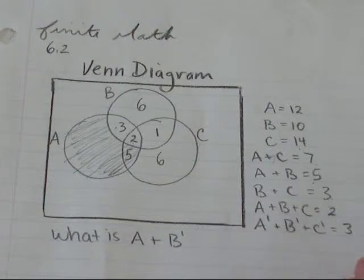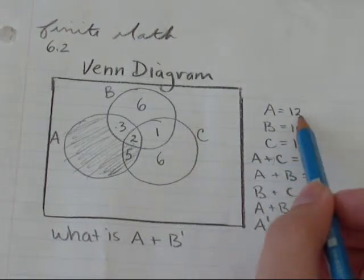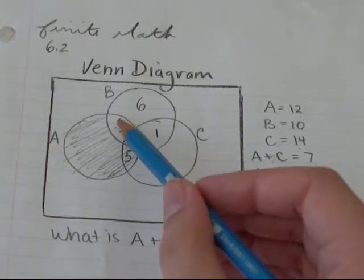And then in A, I've got 12, but I already have 5, 6, 7, 8, 9, 10. So that gives me 2.